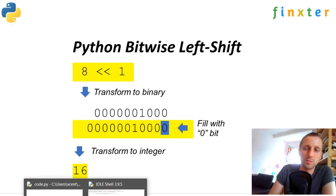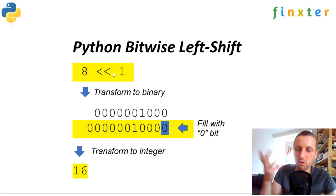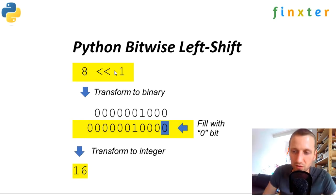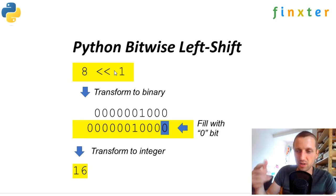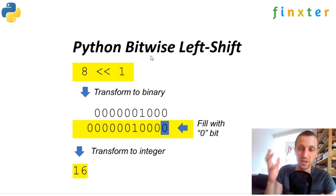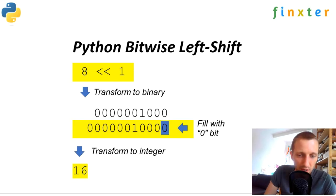The left shift operator consists of two smaller-than symbols. If you use only one smaller symbol, it's the less-than operator that works on two integers or two custom objects that have defined the dunder lt method. But if you use the double symbol, it means the bitwise left shift operator. It has two operands, and some people confuse it with the less-than symbol, but it has nothing to do with it.